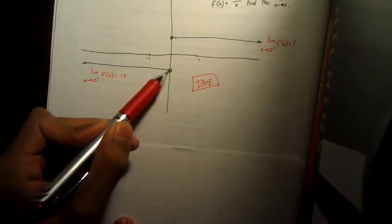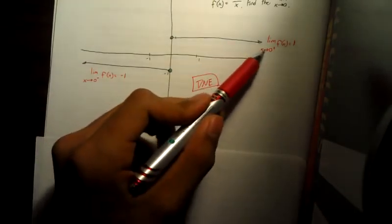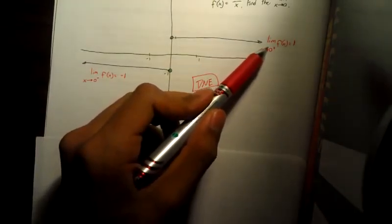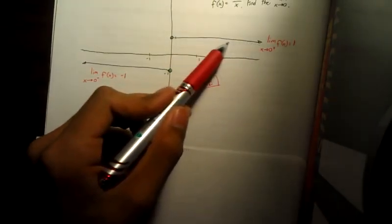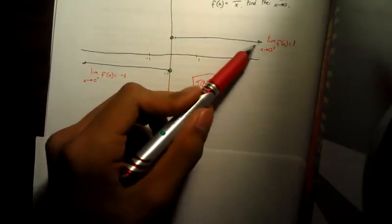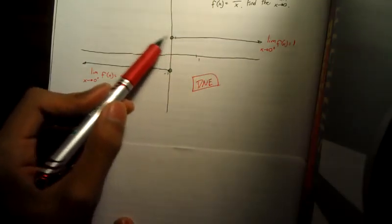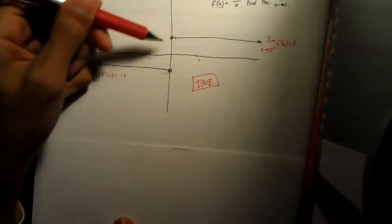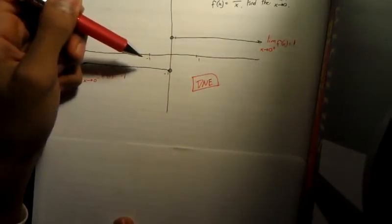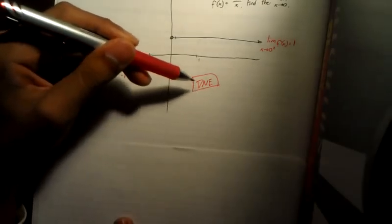Because the left-hand limit does not equal the right-hand limit, there's a discontinuity at x equals zero, which means that the limit as x approaches zero does not exist. If you're coming from the left side it's approaching negative one, and if you're coming from the right side you're approaching one. Because those are two different values, the limit does not exist.